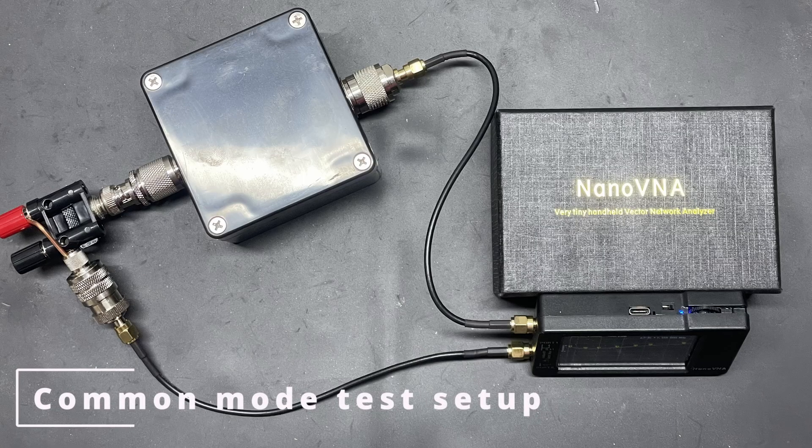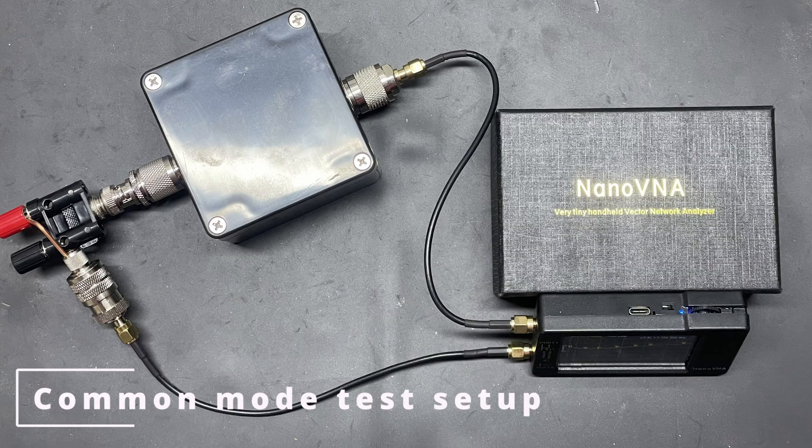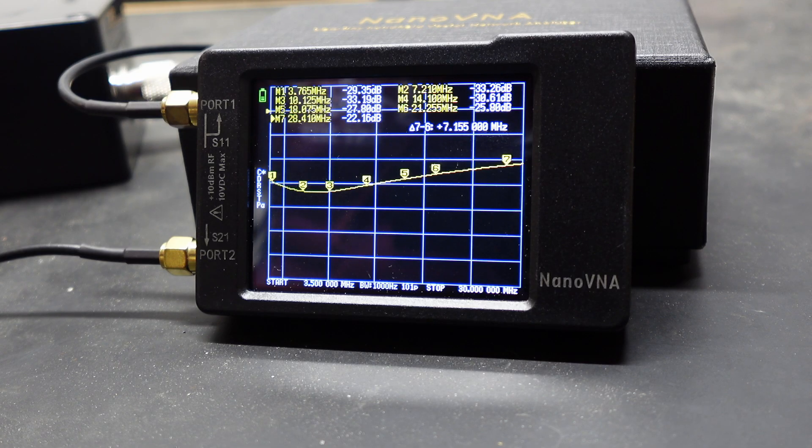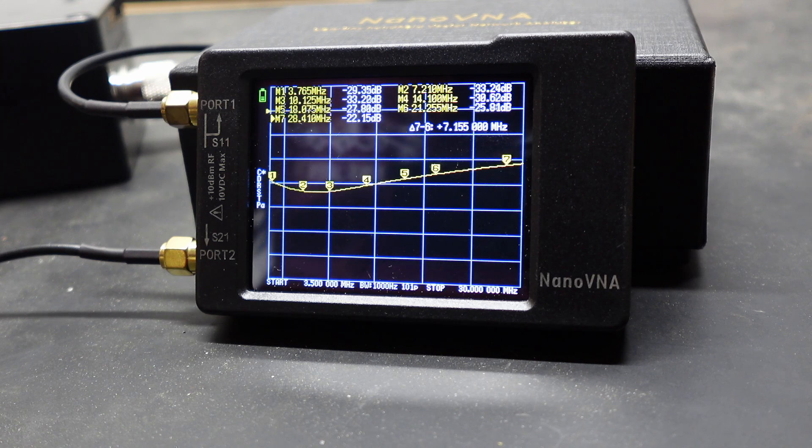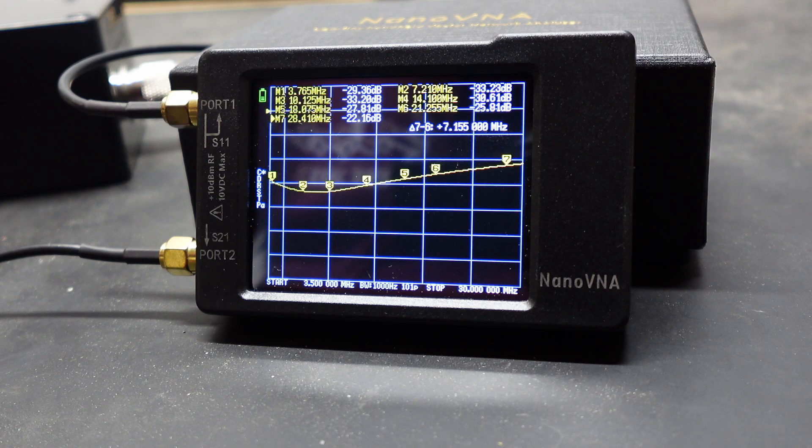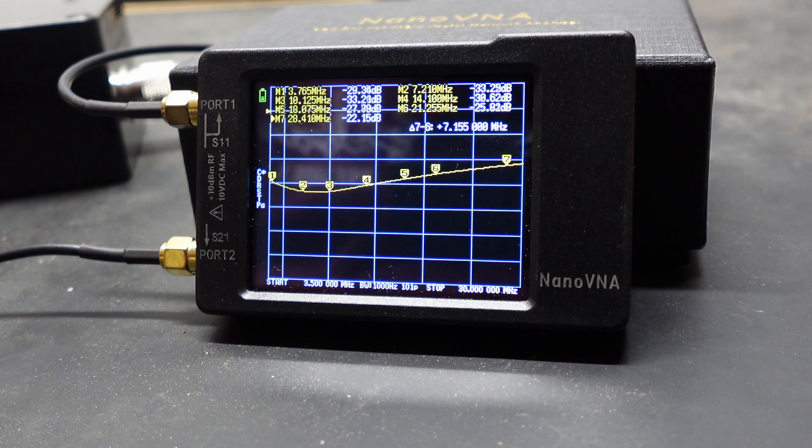So this is the really the attenuation of the common mode current. You can see that at 80 meters it's we'll call it minus 29 dB and it goes up to minus 22 dB at 10 meters. Really good rejection, very very nice, this common mode choke is working very well.